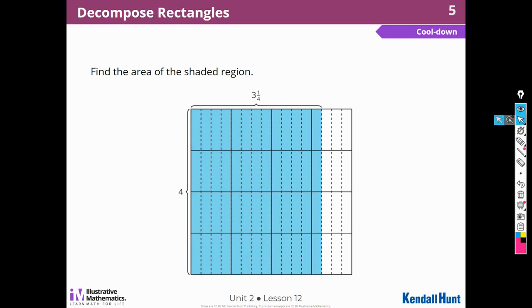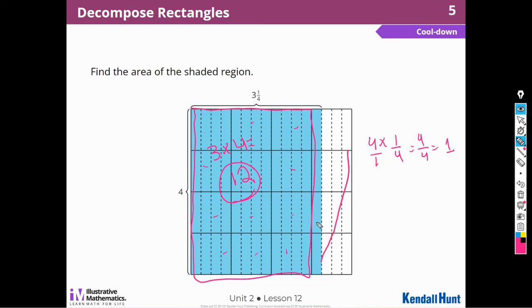All right. Now we can move on to our cool down. Find the area of the shaded region. So I have lots of strategies I can think of to use. I think I'm going to use my strategy of decomposing. So I'm going to find the area of the whole numbers first. So I know that that's 3 times 4 is 12. So this is a whole. 1, 2, 3, 4, 5, 6, 7, 8, 9, 10, 11, 12. And then I can move some things around or I can say 4 times 1 fourth, which is going to give me 4 out of 4, which is going to be one whole. And I can see that because I can move this piece here, move this piece here, and move this piece here. And then I have a whole one filled up. So I think that this shaded region is 13, because I have 12 here and 1 here, 13 square units.